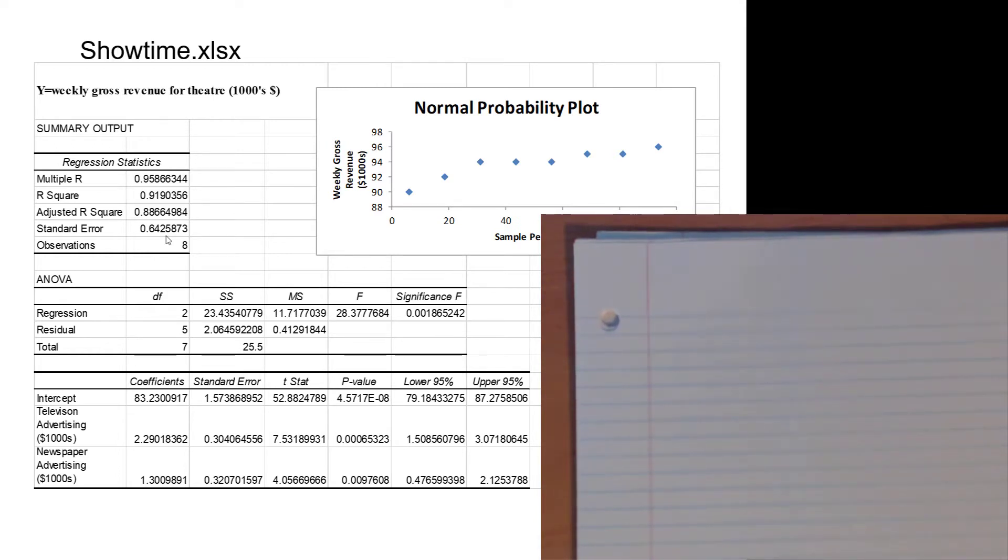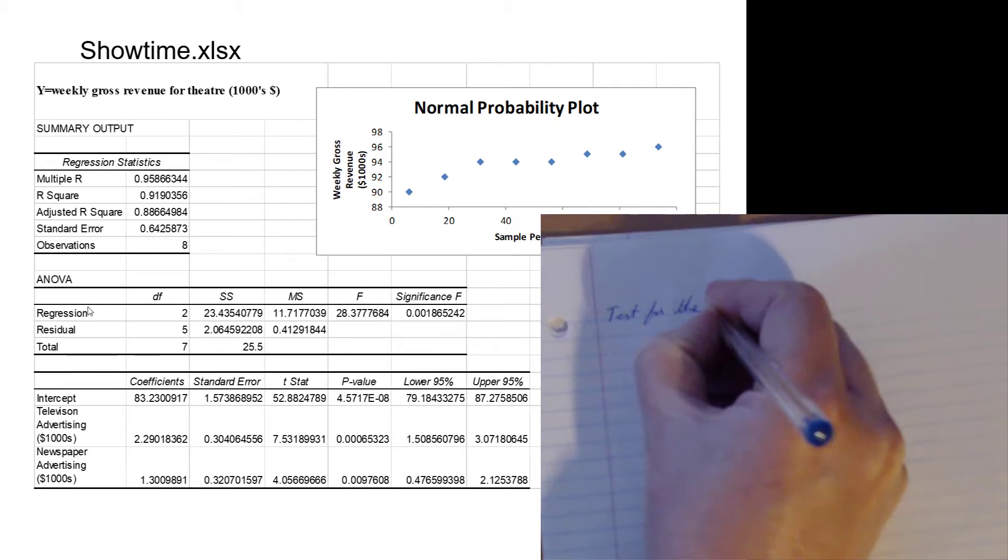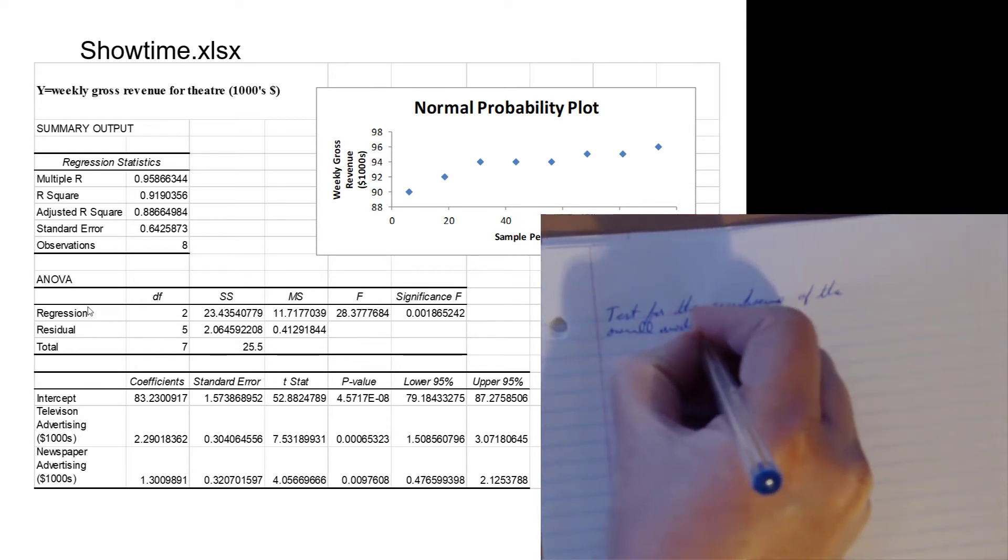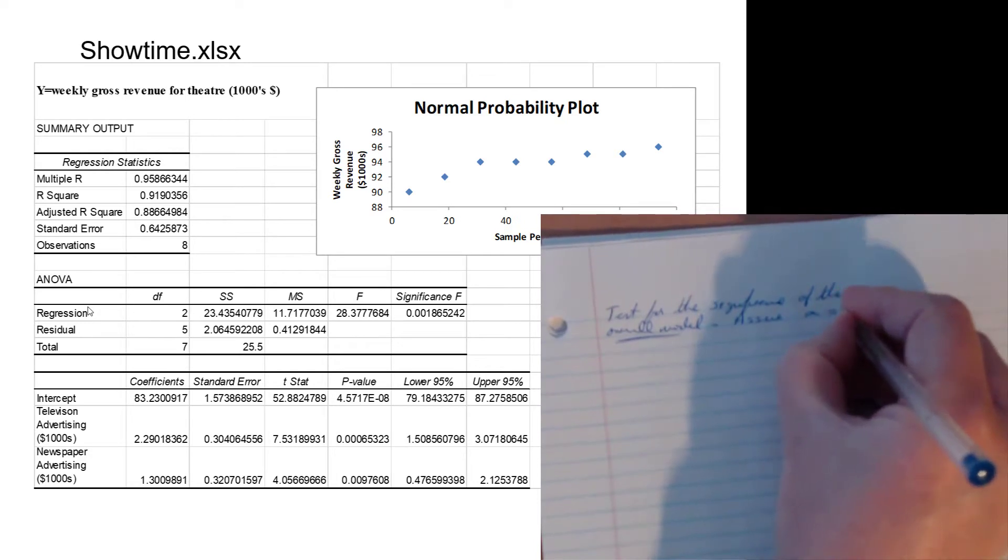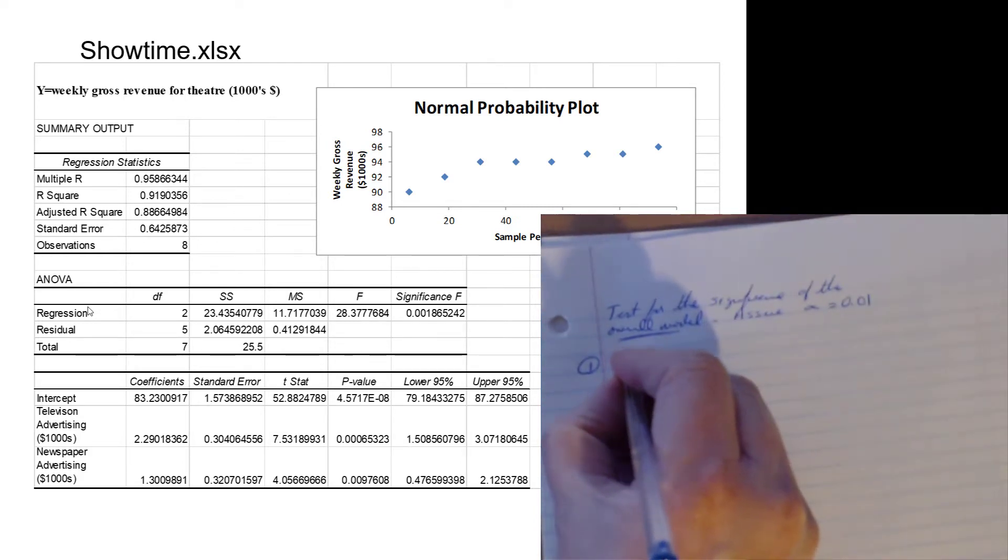Let's continue on and conduct an F test. Let's test for the significance of the overall model. We see the keywords overall model in there, and we assume some alpha of 0.01. The keyword is overall model, which tells us that it's an F test. So our step one in this particular F test is our H0 and our Ha, stating our H0 and our Ha.